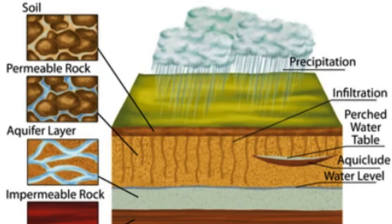While porosity and permeability are related, they are not the same thing. A rock or sediment can have high porosity but low permeability if the pore spaces are not well connected, or if they are filled with fine-grained material that inhibits fluid flow. Conversely, a rock or sediment with low porosity can still be highly permeable if the pore spaces are large and well connected.